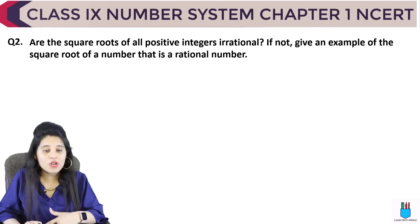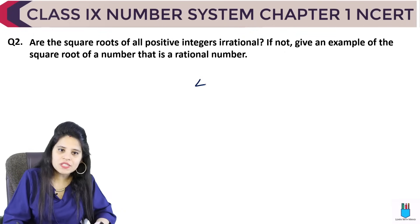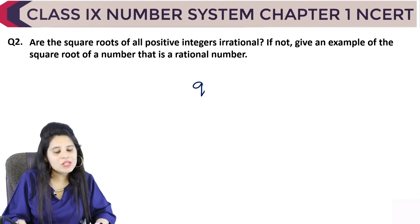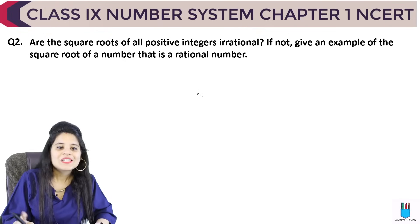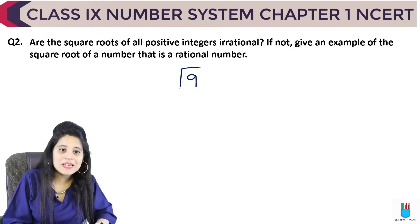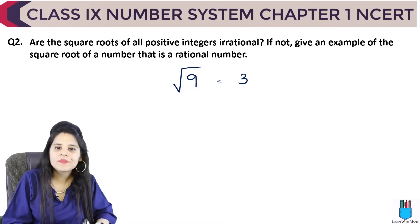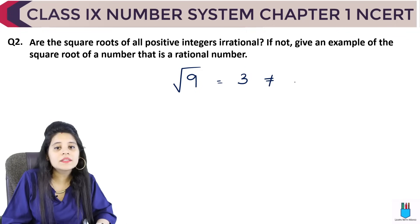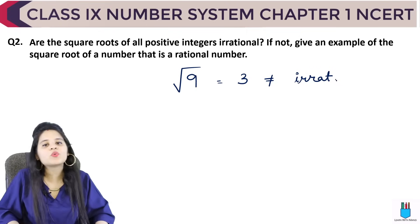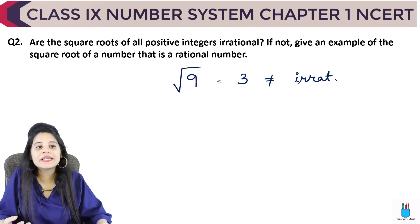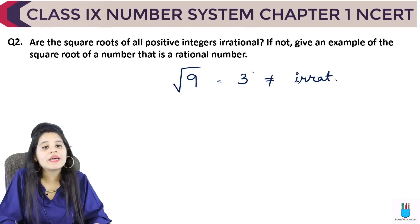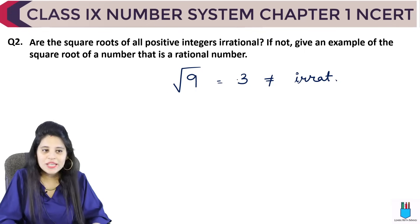Let's take a positive integer — 9 is a positive integer. If I take the square root of 9, what do I get? I get 3. Is 3 an irrational number? No, 3 is not an irrational number. So with this example, we have proved that the square root of every positive integer is not necessarily an irrational number.